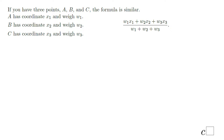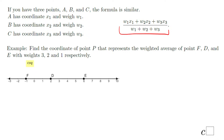Very similarly, you would do this if you have 3 points. In this case, you see A, B, and C. A has the coordinate X₁ and weight W₁; B has X₂ and weight W₂; and C has X₃ and weight W₃. You see the formula is right here. Let's see an example.